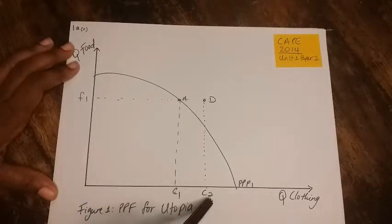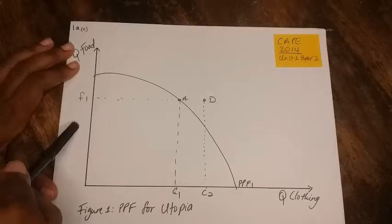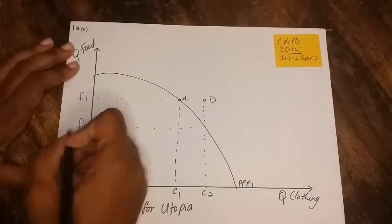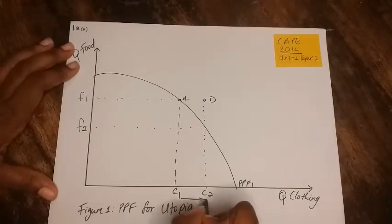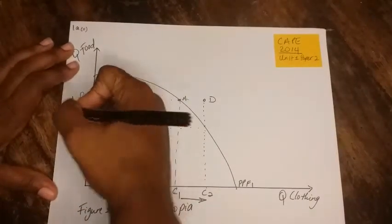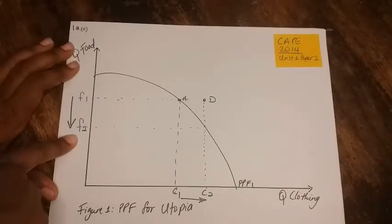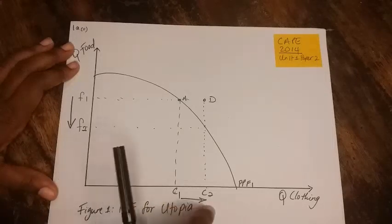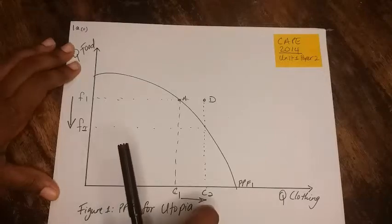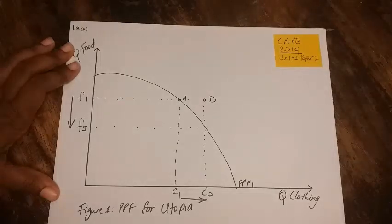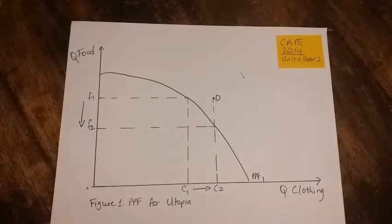So it means we'll have to make a choice. If we want to produce C2 units of clothing, we must give up some food — that takes us to a point such as F2. In order to increase from C1 to C2 units of clothing, we must give up F1 to F2 units of food. What we give up — this sacrifice — is the opportunity cost of increasing production of clothing to C2 units. The opportunity cost is also illustrated by the negative slope of the PPF curve.